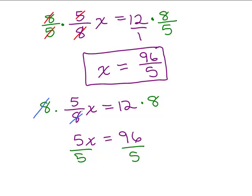So hopefully you're seeing what's going on here. Here, I'm first multiplying by 8 to get 5x equals 96 and then I'm dividing by 5. When you multiply by 8/5, you're really doing that at the same time. You're multiplying by 8, dividing by 5. That's what it means to multiply by 8/5. So you're doing it all in one step.